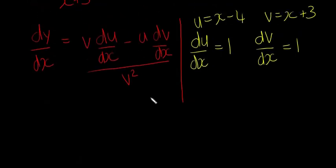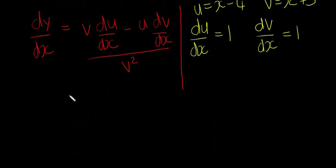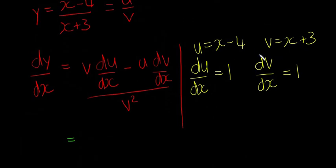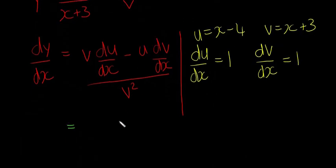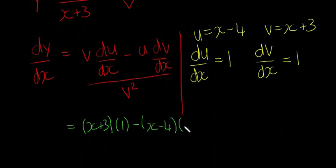So if we want to stick that in here, I'll go green just to keep it nice and colorful. Our v is going to be the first one. So we're going to have x plus 3 multiplied by du/dx which is just 1, minus our u which is x minus 4, multiplied by our dv/dx which is also just 1. That's all going to be divided by v squared, which is going to be x plus 3 squared.